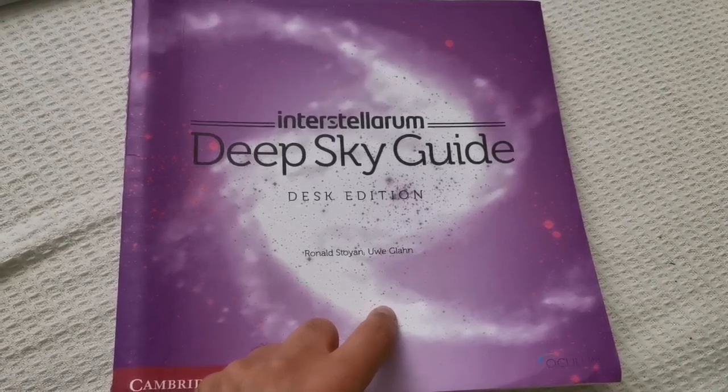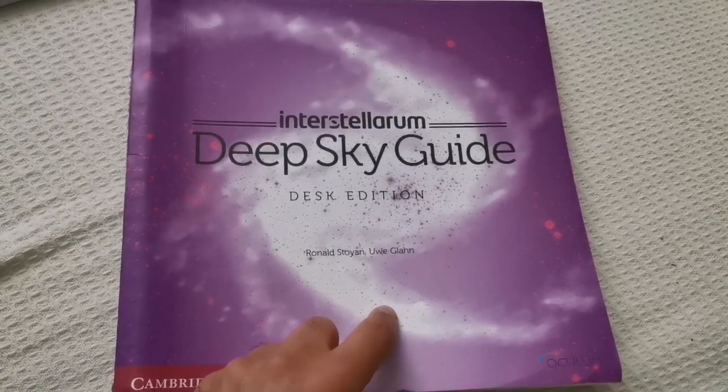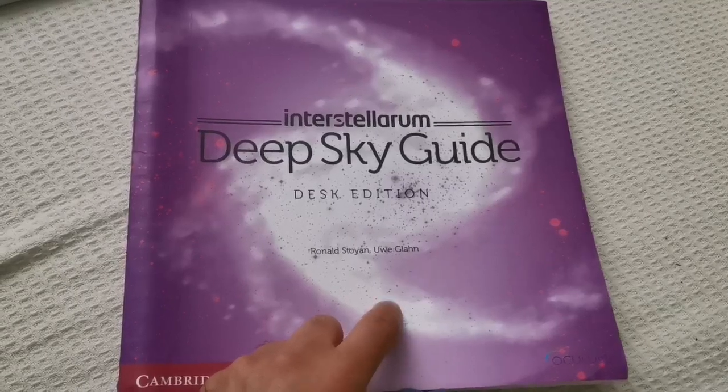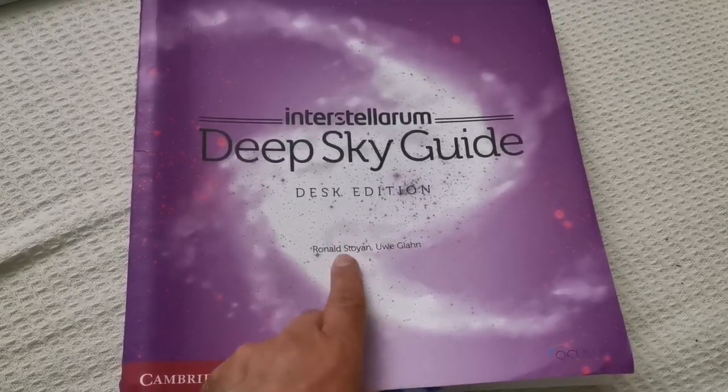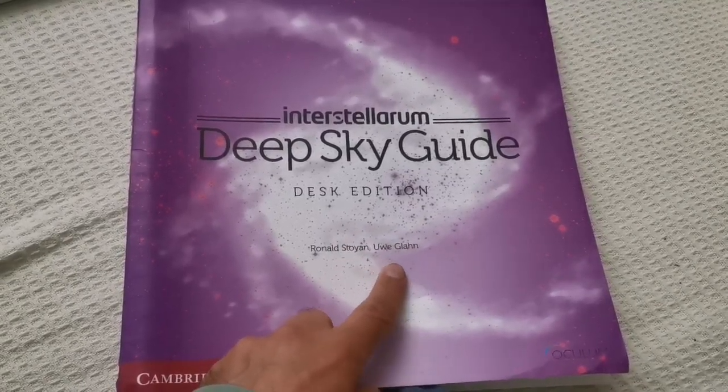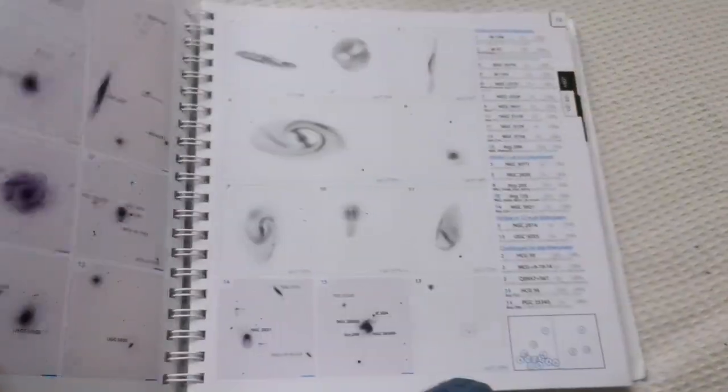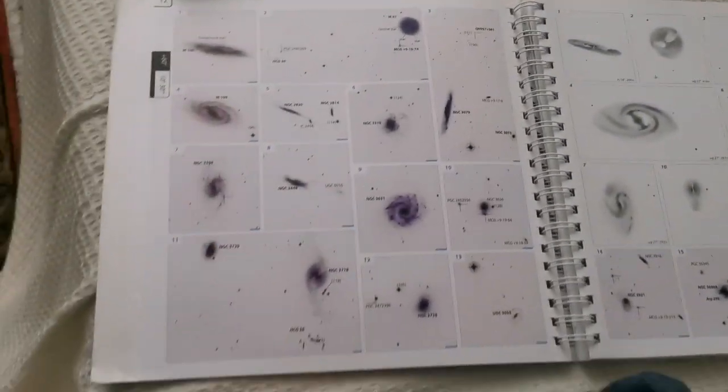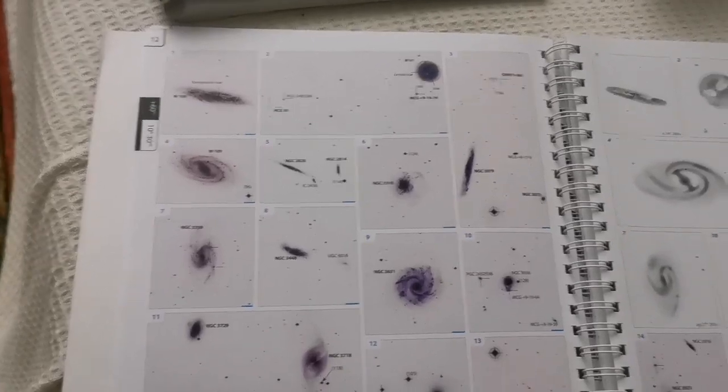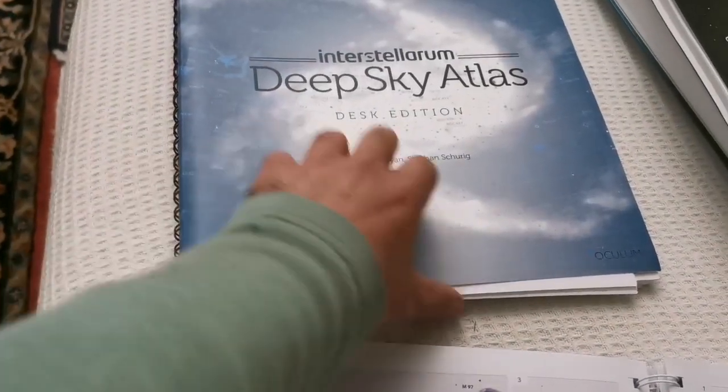I'm looking at the Interstellarium Deep Sky Guide, desk edition by Ronald Stoyan and Ove Clown. These are the charts related to page 12 in the book version. Chart 12 is Ursa Major, and this is the actual chart.